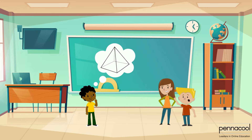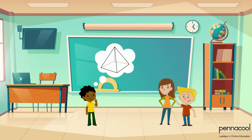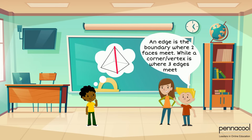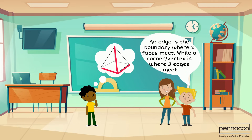Manny then asks how many edges and corners this solid had. An edge is the boundary where two faces meet, while a corner, also called a vertex, is where three edges meet.